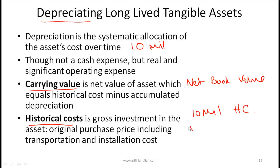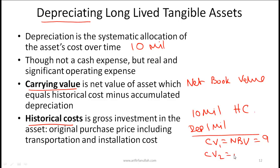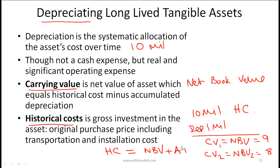Let's say that in year one your depreciation is 1 million. At the end of year one, your carrying value — the same as net book value — is 9 million, and accumulated depreciation is 1 million. At the end of year two, net book value is 8 million and accumulated depreciation is 2 million. Notice that accumulated depreciation plus net book value will always equal historical cost: historical cost = net book value (carrying value) + accumulated depreciation.